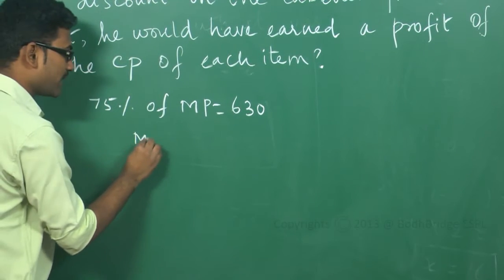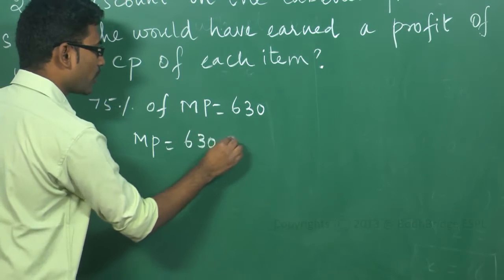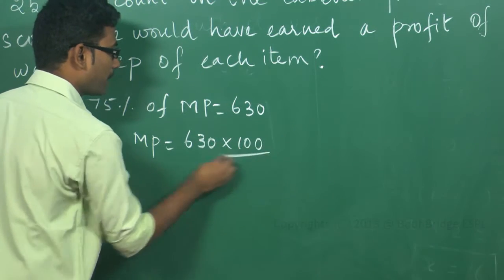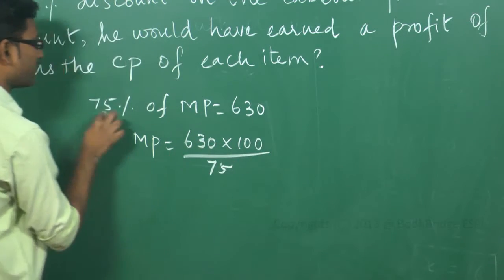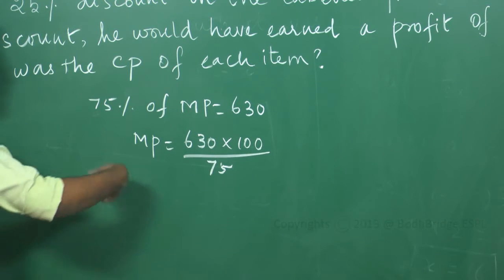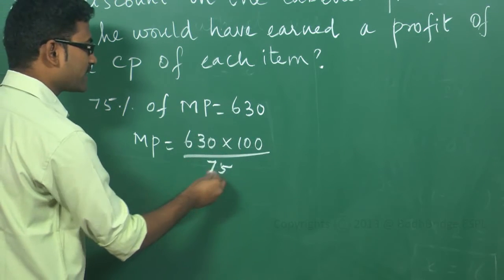Market price is equal to 630 into 100 by 75. Because 75% can be written as 75 by 100, that will come as 100 by 75.